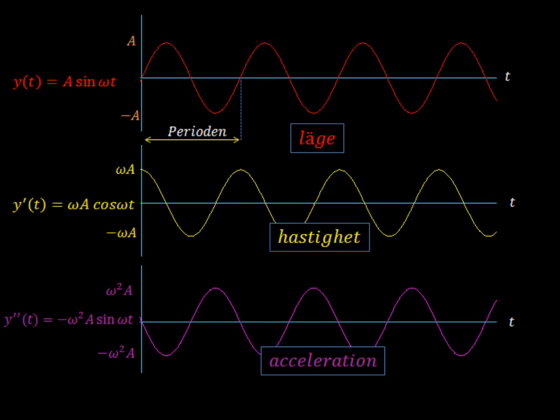Welcome back. We'll be looking at harmonic oscillations again — this is part two. What we're going to attempt to do is find the time it takes to make one complete oscillation, the period as it's called. In order to do that, we'll have to take a quick look at what we learned in part one.